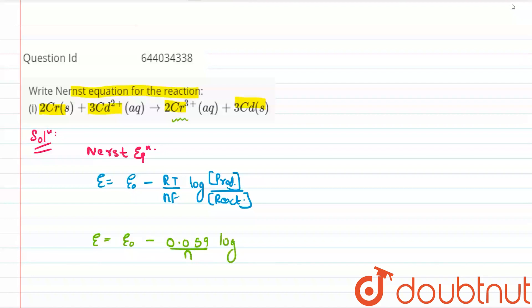So what is the product here? The product over here is chromium ion Cr3+ raised to the power of its stoichiometry, that is 2, into Cd.